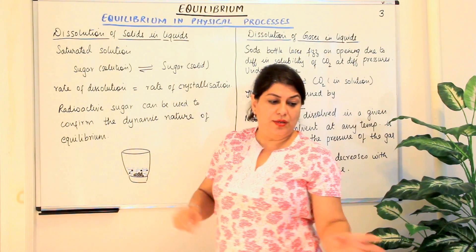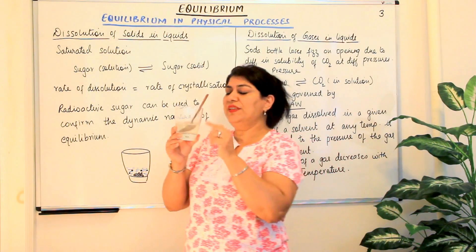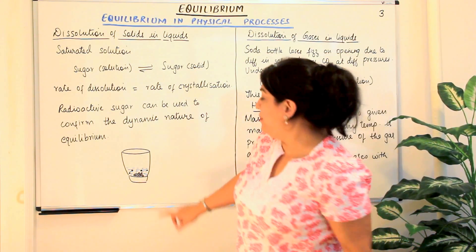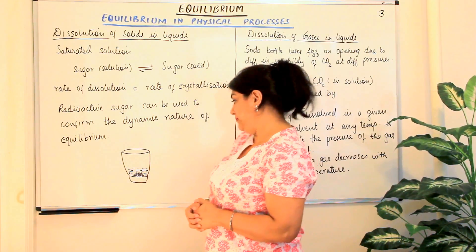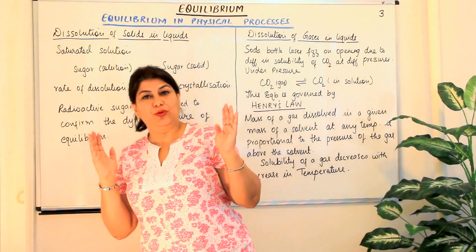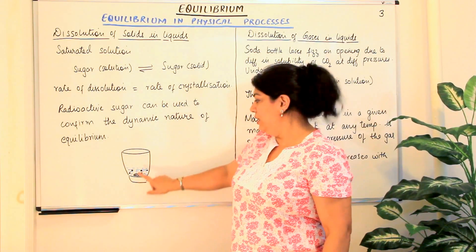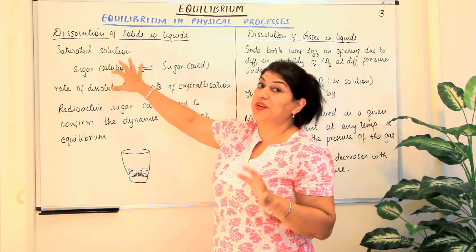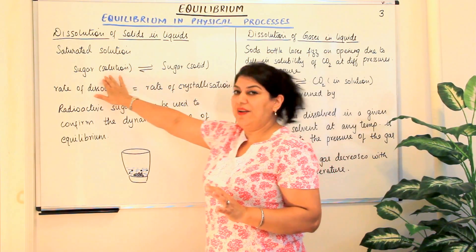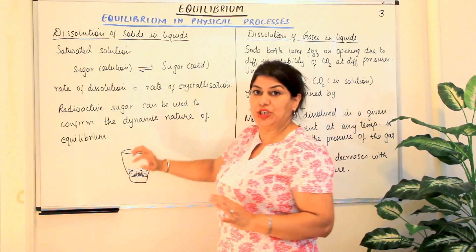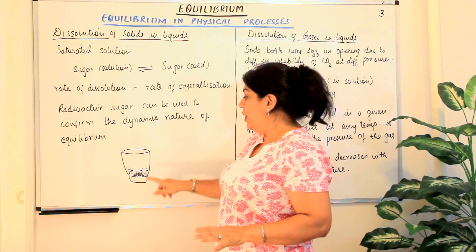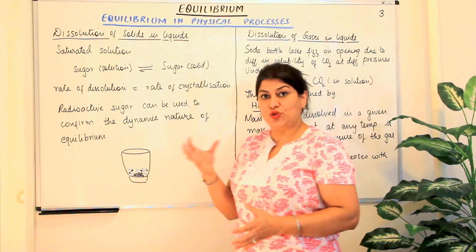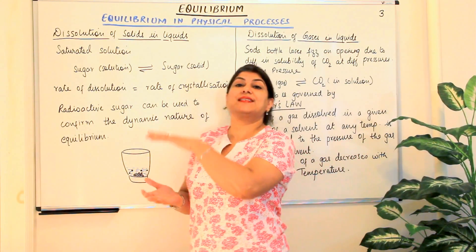I have made this glass with a saturated solution and shown you these little particles of sugar which have settled down at the bottom because they could not dissolve in the water. So now you've understood what a saturated solution is. When this situation occurs, we find that an equilibrium establishes between the liquid solution — that is the sugar solution — and the solid sugar which has settled down at the bottom.